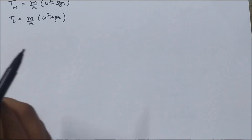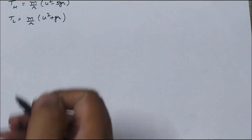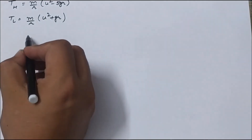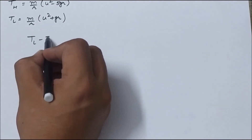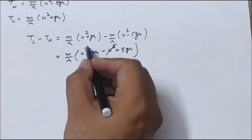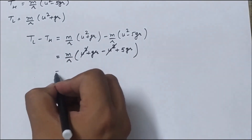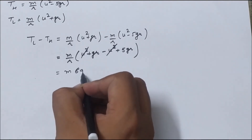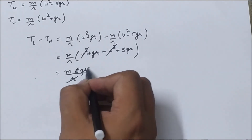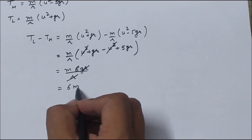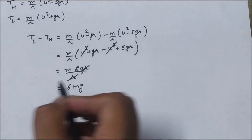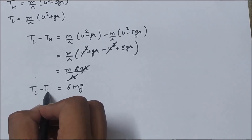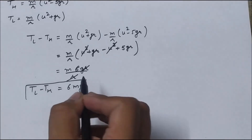Now we evaluate the relation between T_H and T_L. If we subtract T_H from T_L, the u² terms cancel out. We get m times 6gr upon r. The r cancels, so the difference between the two tensions is 6mg.